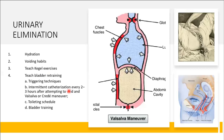Teach toileting schedules: first thing in the morning, before or after meals, before and after physical activity, and at bedtime. Clamp an indwelling catheter intermittently before removal to allow the bladder to fill and restore bladder function. Also instruct the client to avoid diuretics such as caffeine, and encourage fluid intake up to 2,000 mL.